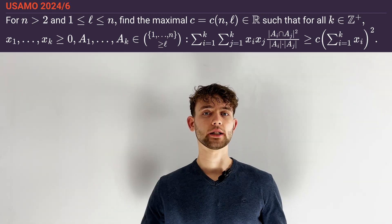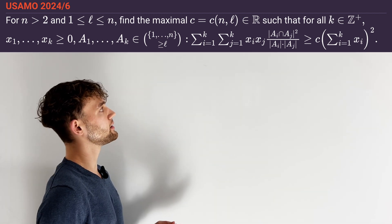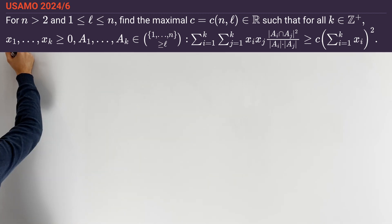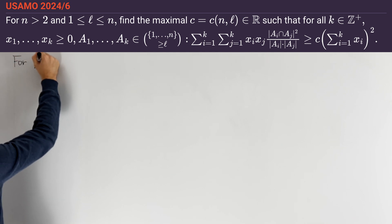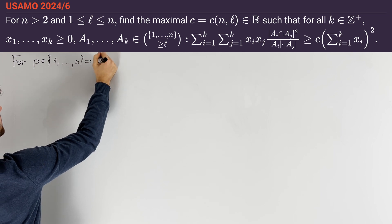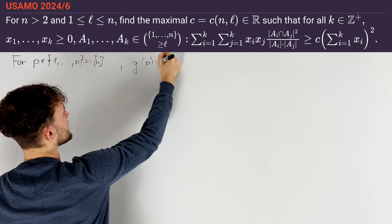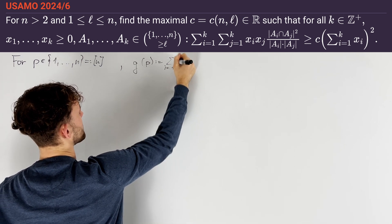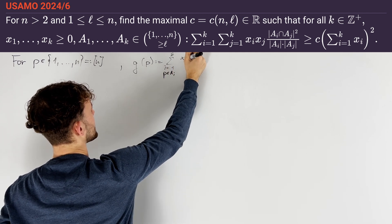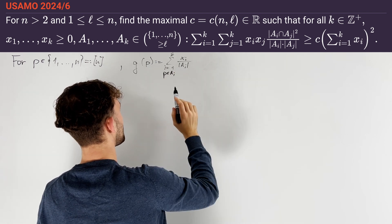We are going to use a general approach that is very important to understand if you want to deal with identities involving intersections of sets. The idea, which I had seen before somewhere else, is to consider for any p in {1, …, n} — which I will abbreviate as [n] — the function g(p) defined by the sum over i from 1 to k such that p lies in Aᵢ of xᵢ divided by |Aᵢ|.